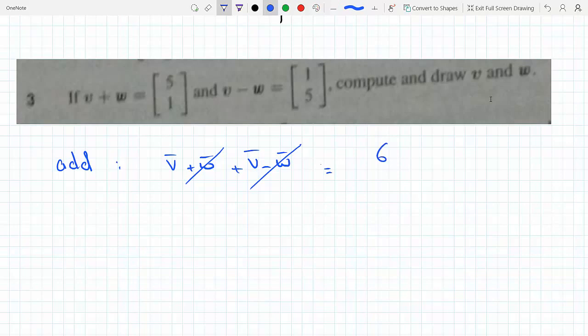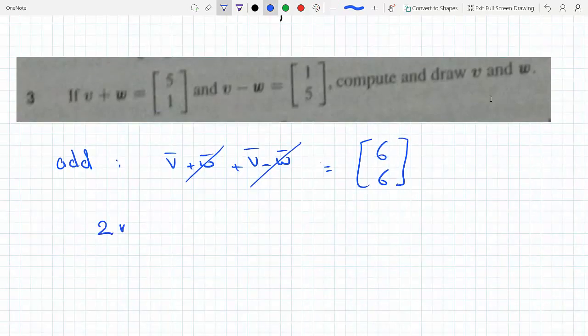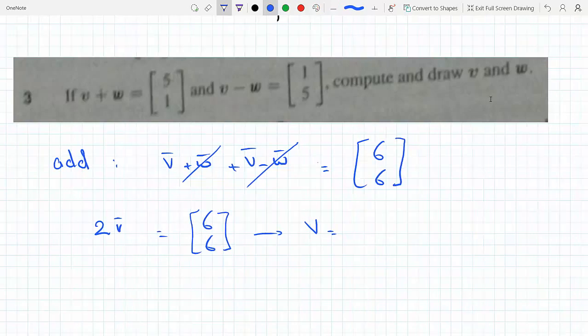So 5 plus 1 is 6, and 5 plus 1 is 6. Yeah, so 2v is [6,6]. And now I just divide by 2 to find v. So v would be [3,3].